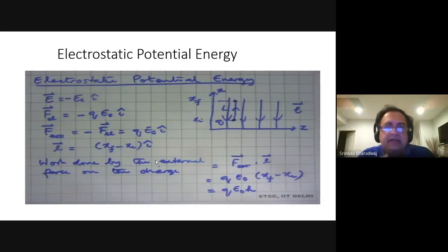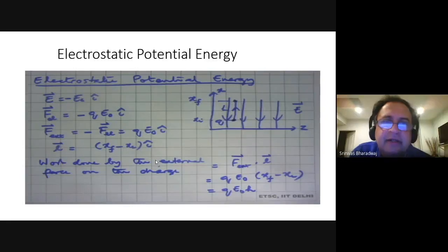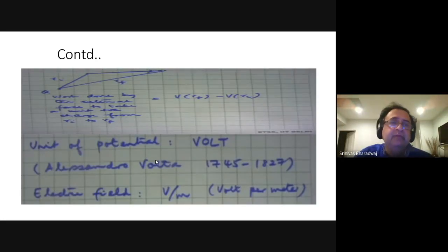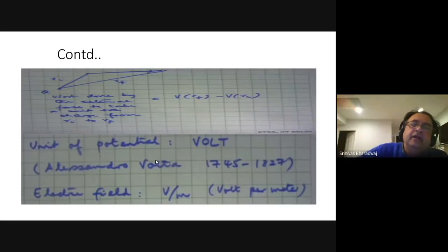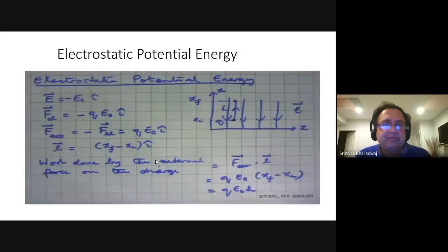That is what happens inside a capacitor — we will discuss capacitors. Electrostatic potential energy is represented by the work done by the external force on the charge: the line integral ∮F·dL is the work done. Electrostatic potential energy is very much related to work done, and that's why we use the term U. We already discussed gravitational potential energy. Similarly, electrostatic potential energy exists in the electrostatic field, where the equivalent of mass is charge.